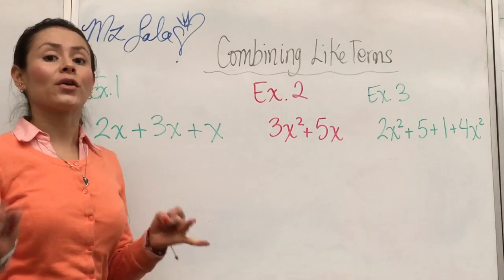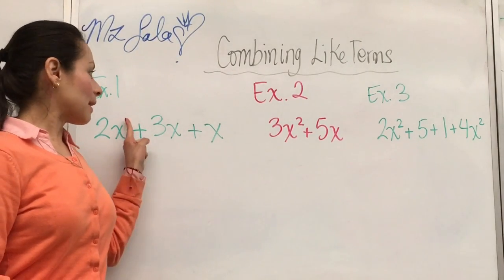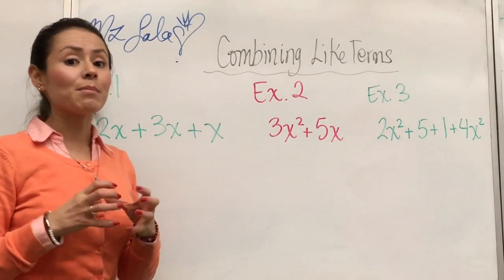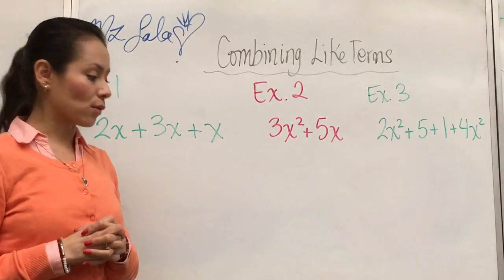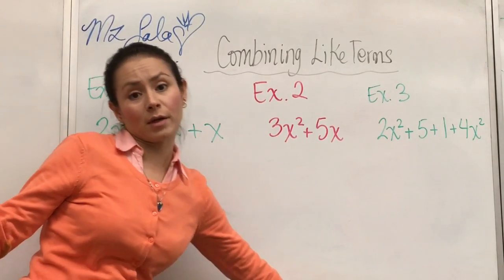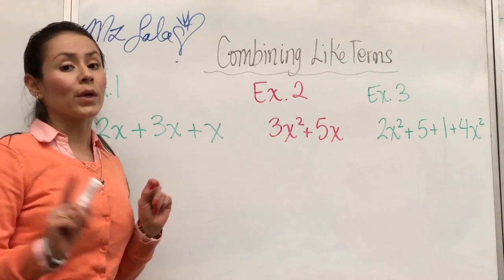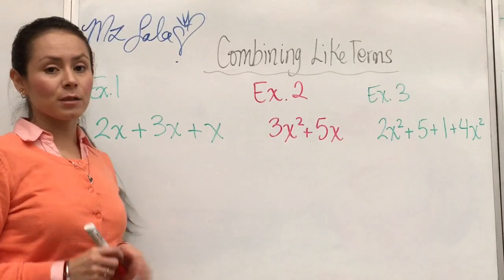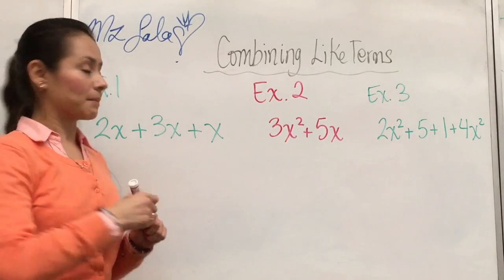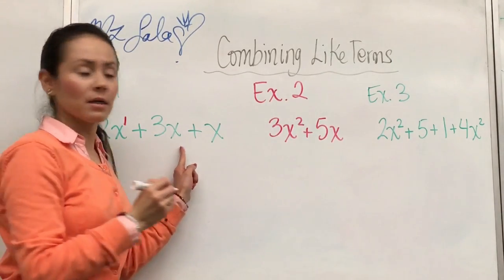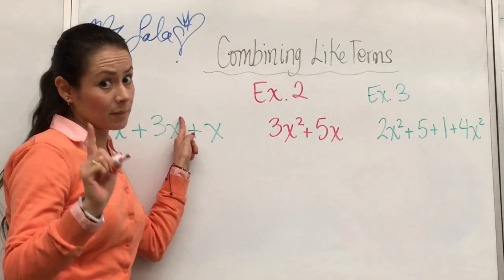Then we need to look at their exponent, their power. They need to have the exact same power for us to be able to combine them because that would make them like terms. So we talked about it in the past—a variable with no exponent has an invisible exponent of 1. So we have a 1 here. Since it doesn't have anything, it doesn't mean 0, it means 1.